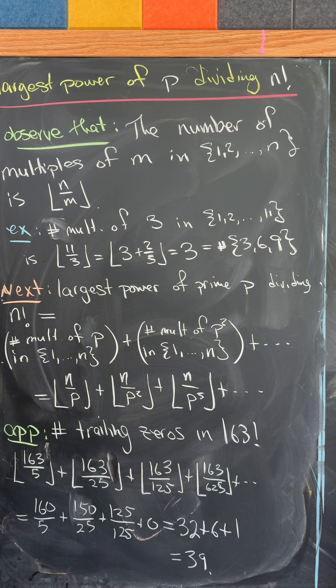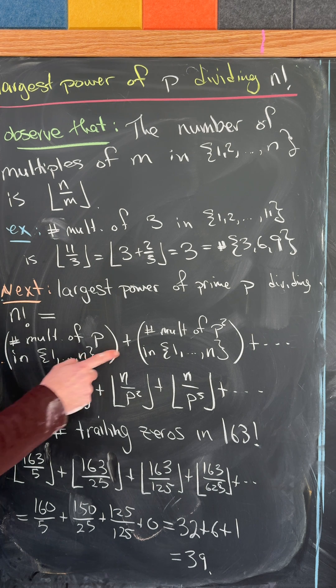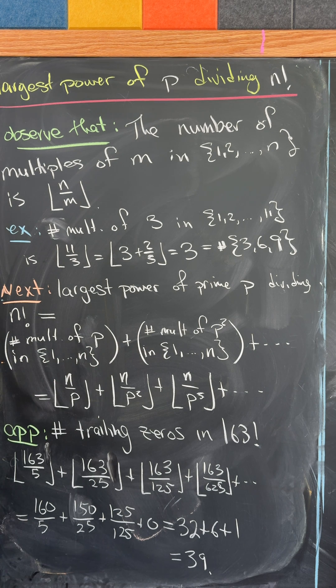Next, the largest power of a prime p dividing n factorial is the number of multiples of p in this set plus the number of multiples of p squared in that set plus so on and so forth with bigger and bigger powers of p. So here you get that's equal to the floor of n over p plus the floor of n over p squared plus the floor of n over p cubed and so on and so forth. Eventually, that'll be 0.